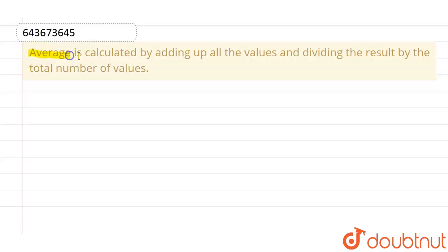The given question is: average is calculated by adding up all the values and dividing the result by the total number of values. Okay, so we have to find out if the statement is true or false.